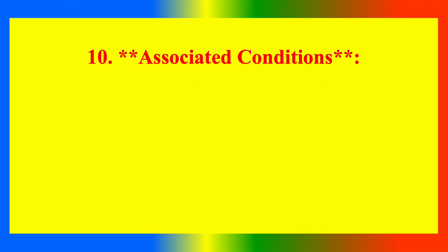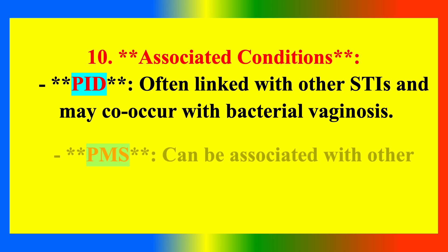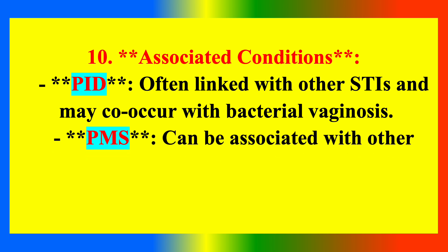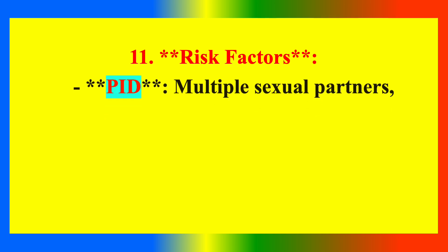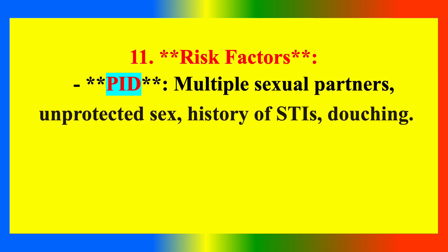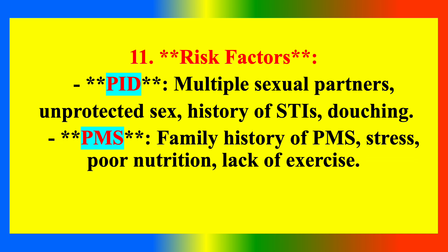Associated conditions: PID is often linked with other STIs and may occur with bacterial vaginosis. PMS can be associated with other mood disorders such as depression and anxiety. Risk factors for PID include multiple sexual partners, unprotected sex and history of STIs. Risk factors for PMS include family history of PMS, stress, poor nutrition and lack of exercise.